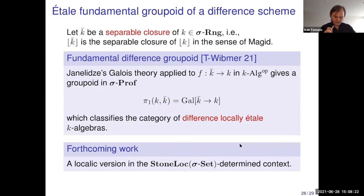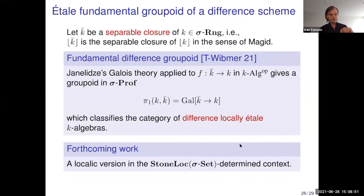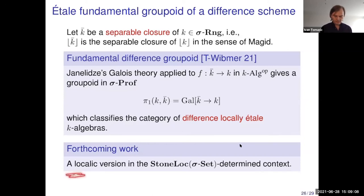This difference profinite groupoid classifies the category of difference locally étale k-algebras — a technical notion where component-wise you can have a totally disconnected space of components, but over each component you have an ind-étale object. In forthcoming work, we want to do a localic version in the P-determined context of Bunge that I already mentioned, completing the picture. A difference profinite space actually lives in the realm of topological dynamics — it's a topological space with a shift, and you can view it as a dynamical system.